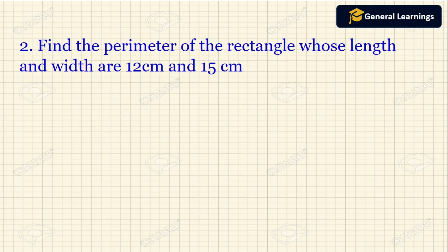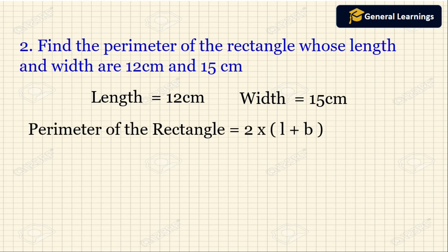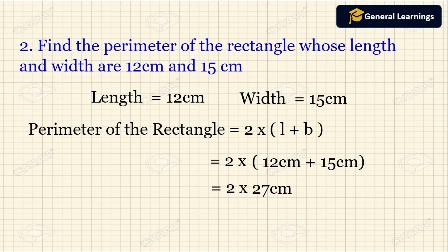Find the perimeter of a rectangle whose length and width are 12 centimeter and 15 centimeter. So length is 12 centimeter and width is 15 centimeter. The perimeter is 2 into L plus B, so 2 into 12 plus 15. Adding 12 plus 15 gives 27, and 2 into 27 gives 54 centimeter. So the perimeter of the rectangle is 54 centimeter.